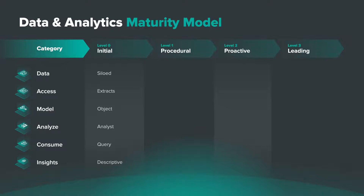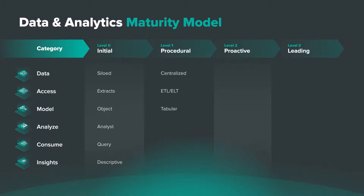When we get to level one, the procedural level, it starts to get a little more interesting. We've taken the silos and probably built a data warehouse where we centralized that data into one location using ETL or ELT tools. We created data pipelines to get that data, relieving the burden of data analysts from having to load data straight from files. Now there is a data model — we've created star schemas, or tabular models, in the form of tables and views and join relationships in the data warehouse.